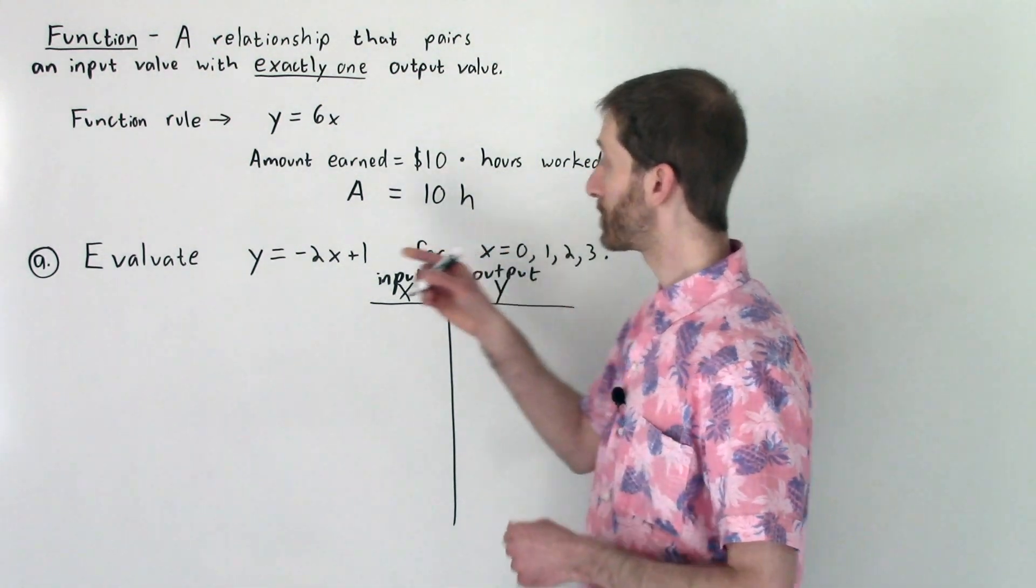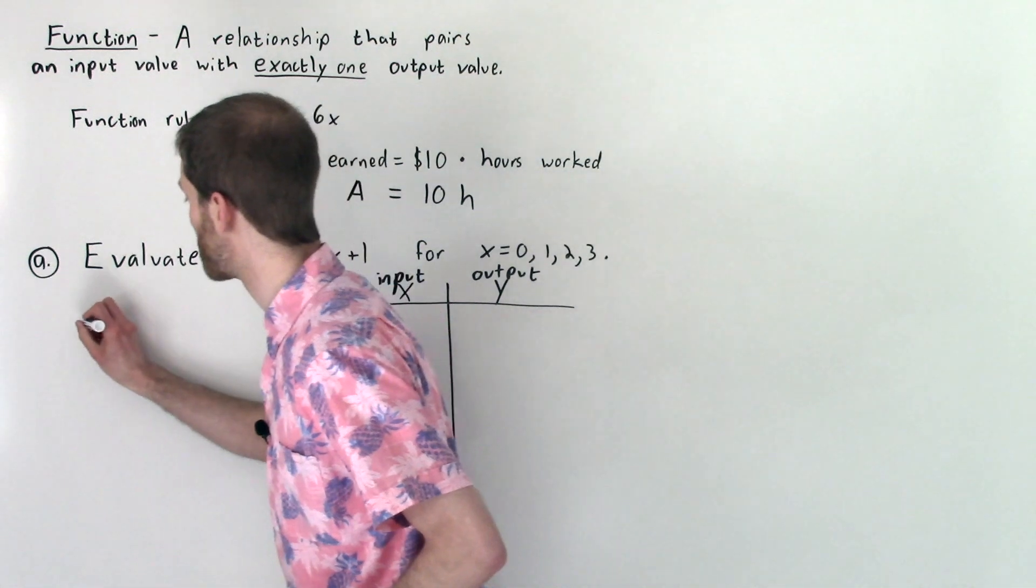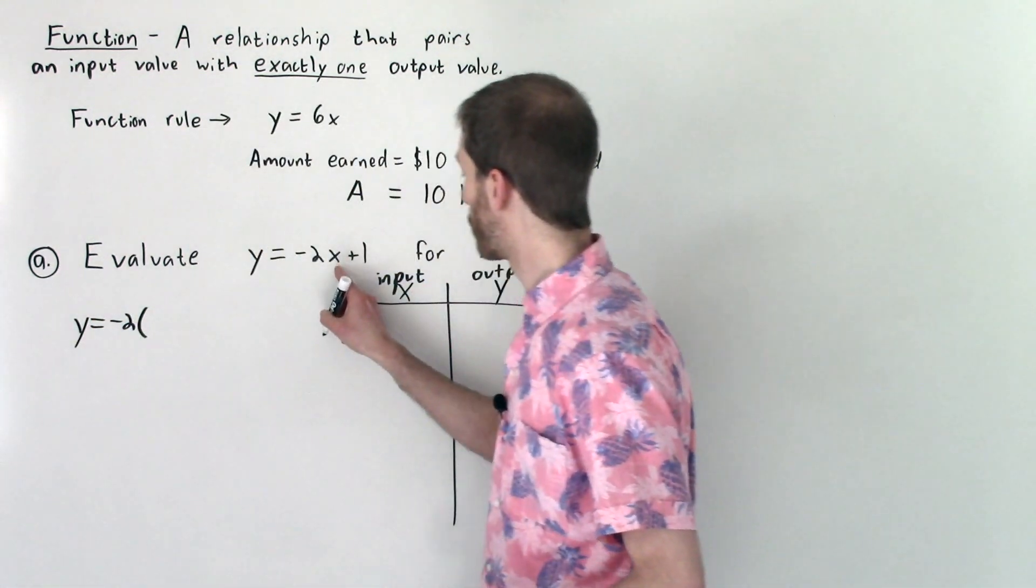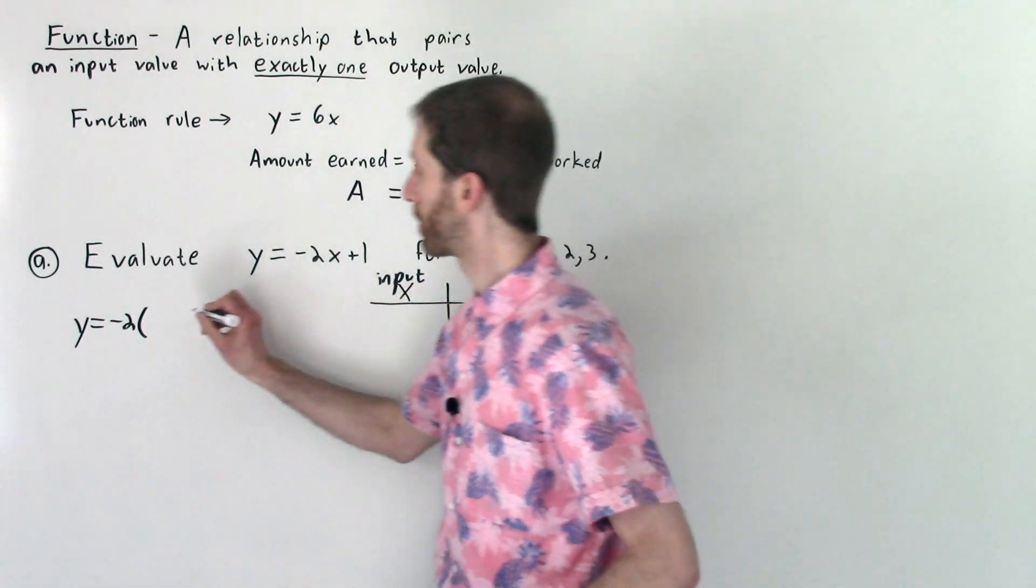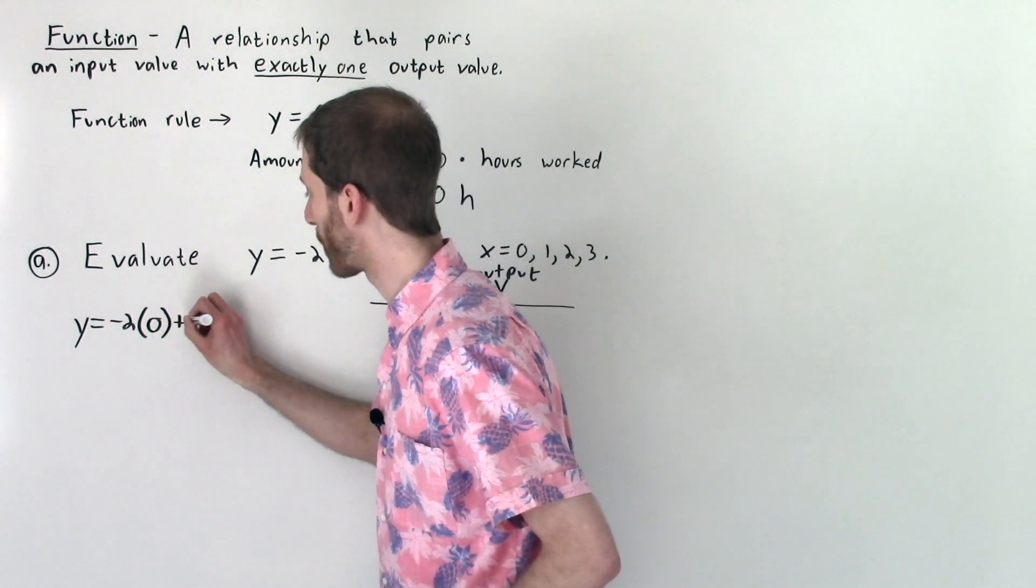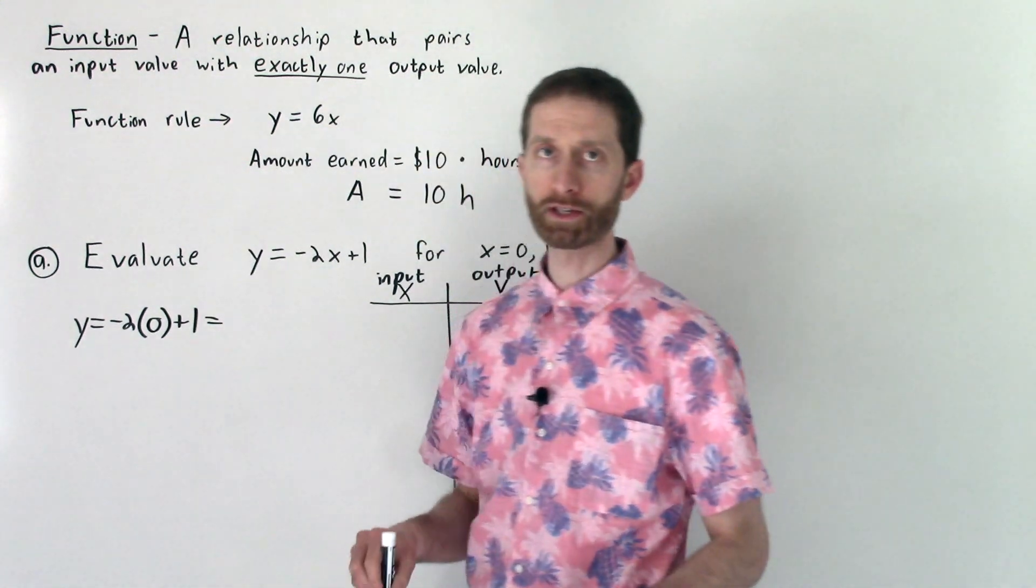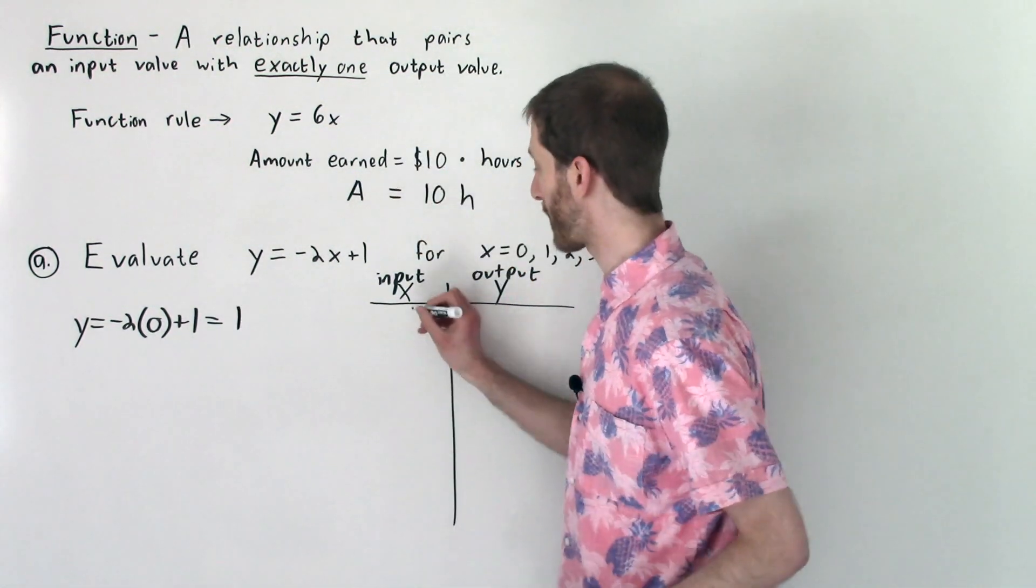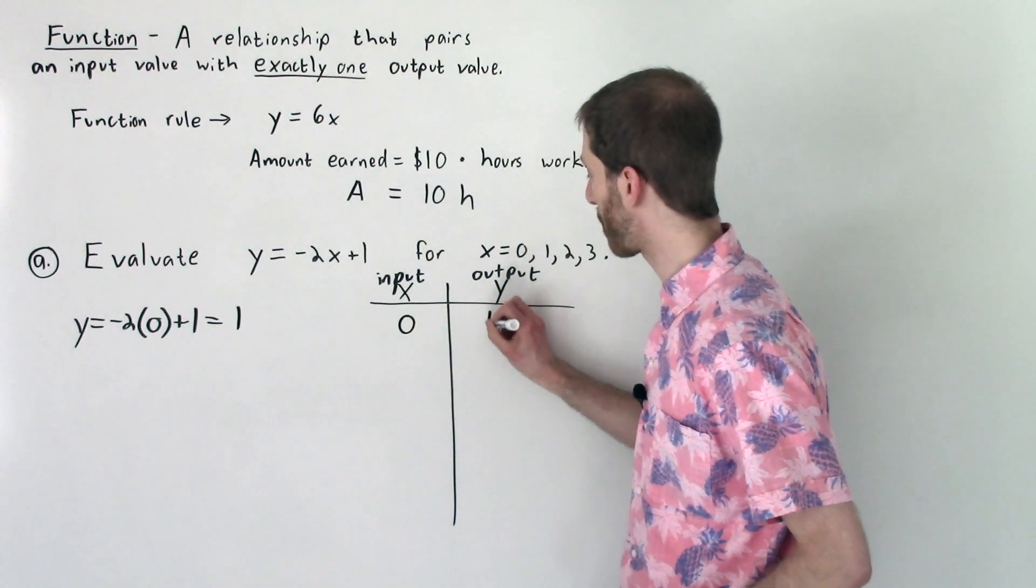So I'm going to input 0 first. So I'm going to follow this rule, which means that y is equal to negative 2 times, we're inputting in 0. And then we're going to add 1. Negative 2 times 0 is 0 plus 1 is 1. It's as simple as that. So I input 0 and I got an output of 1.